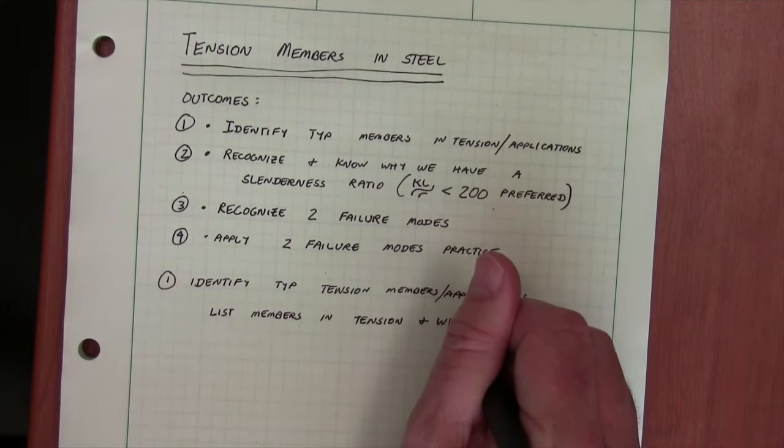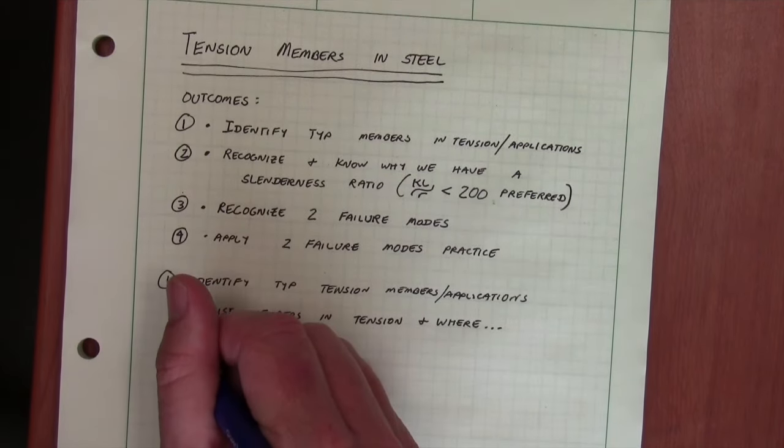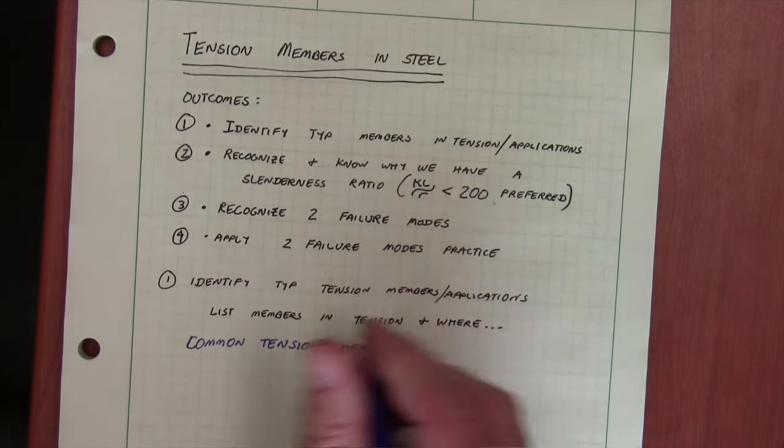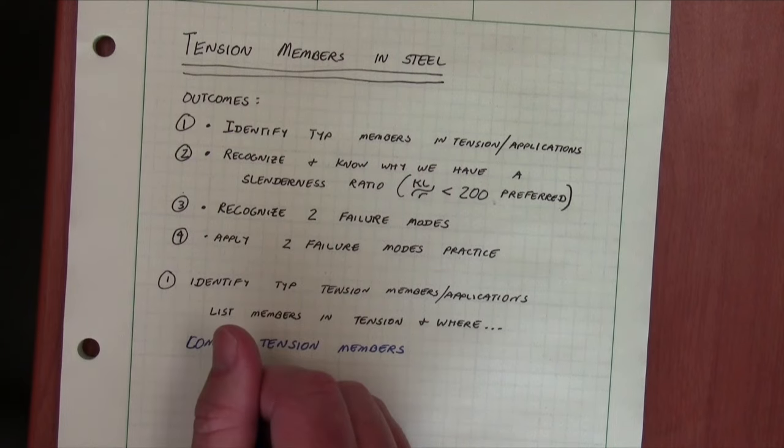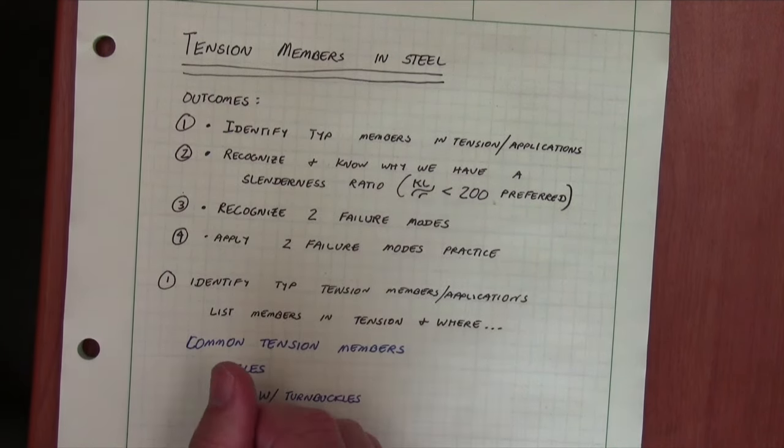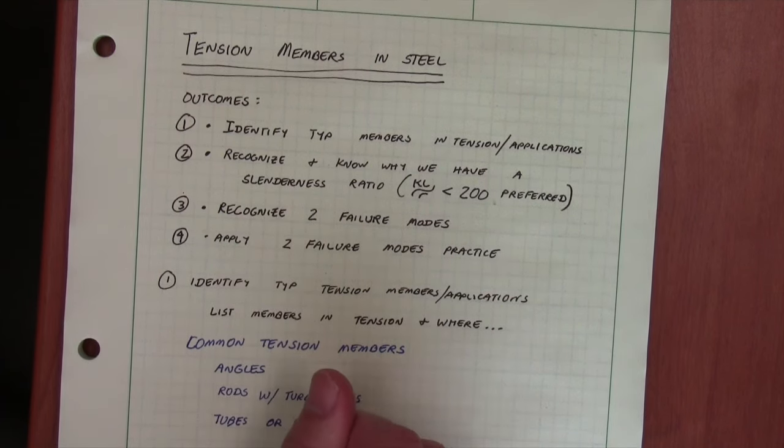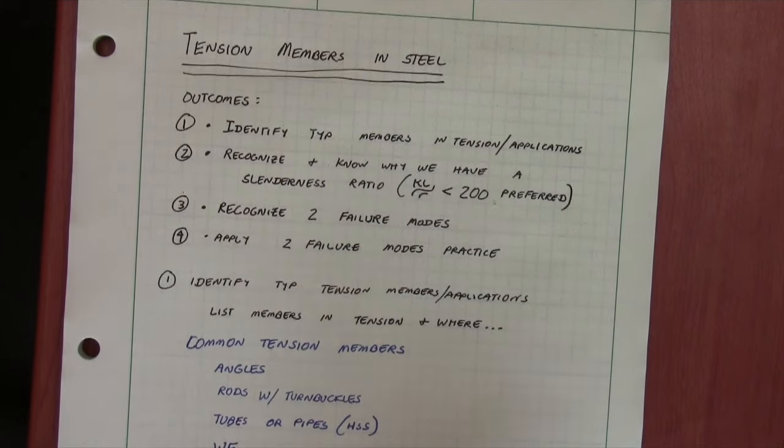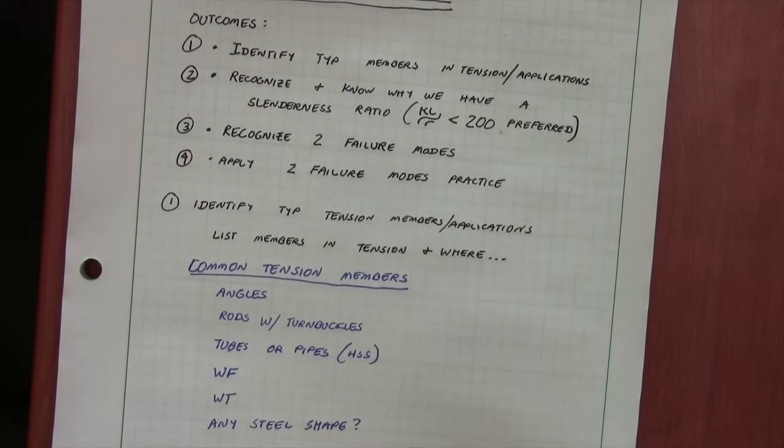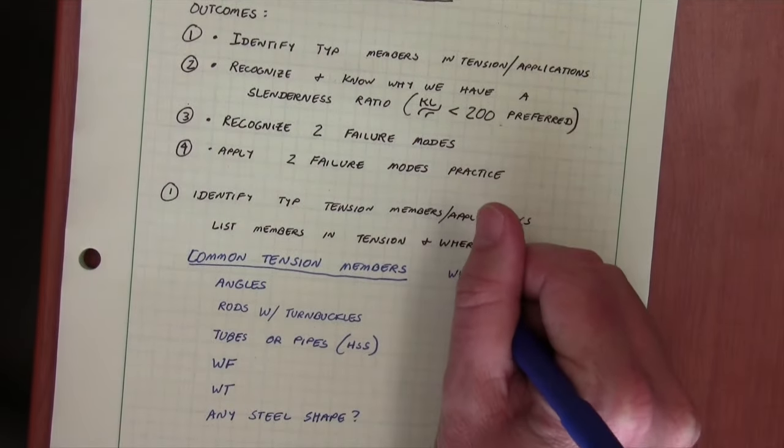For me there's several types of common applications that I've seen. First of all I think of angles and I think of rods or threaded members. Sometimes those members have turnbuckles. Sometimes we'll have tubes or pipes. We've referred to those as hollow structural sections. Also wide flanges or WT. Really any steel member we've talked about could be used as a tension member.